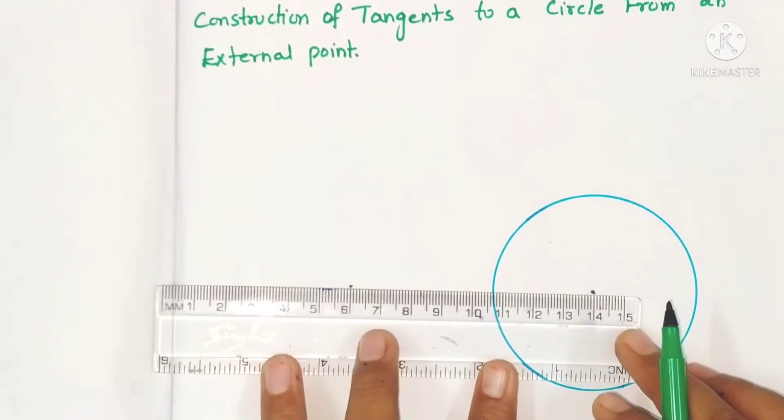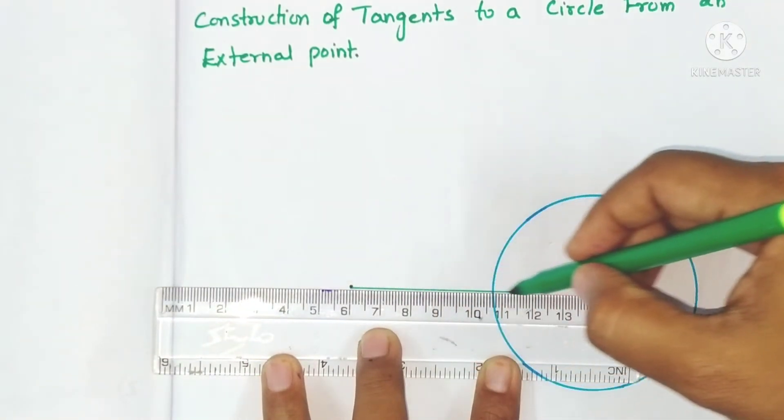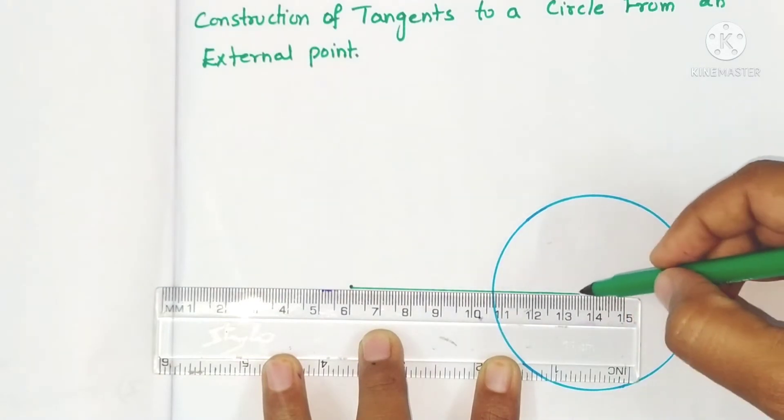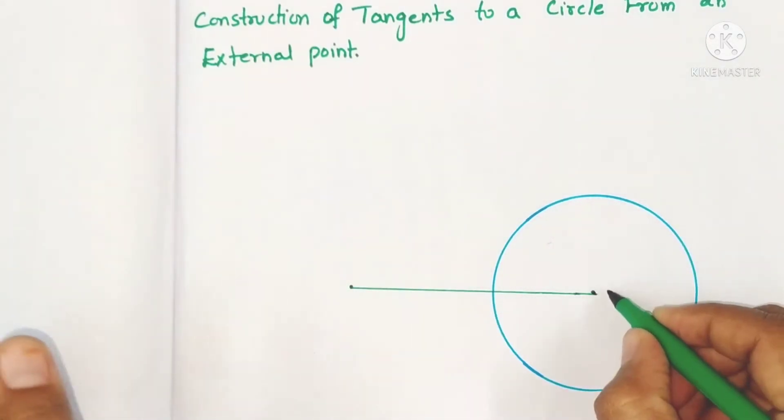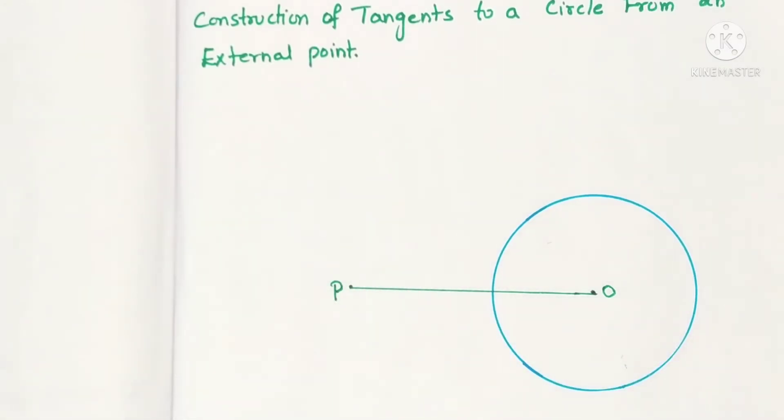And join these two points. Now let the center of the circle be O and the external point be P. Now we have to draw the perpendicular bisector—sorry, not angular bisector—we have to draw the perpendicular bisector of OP.